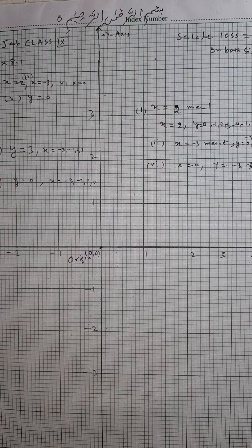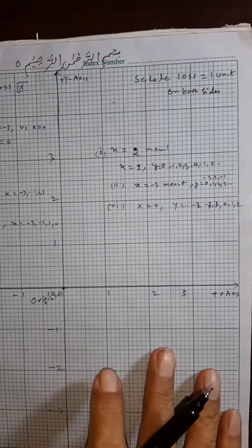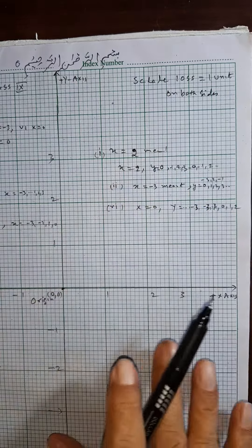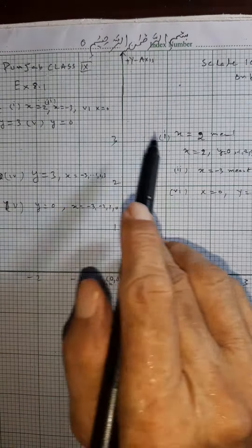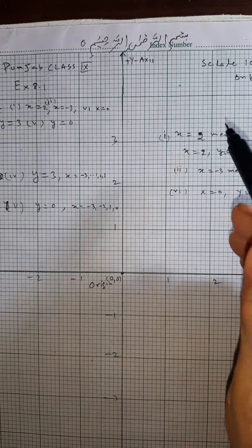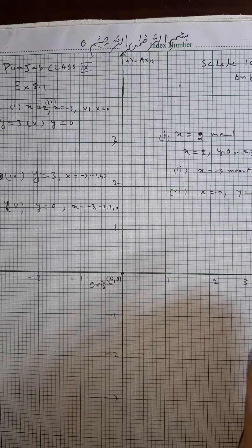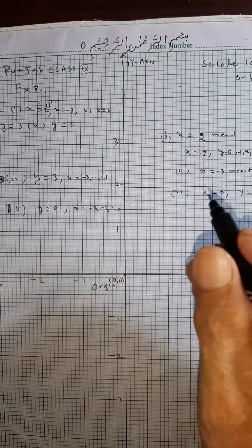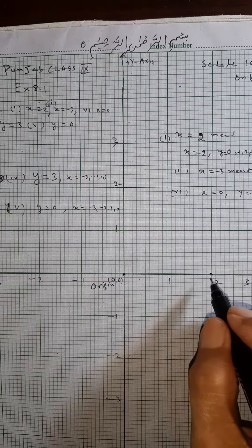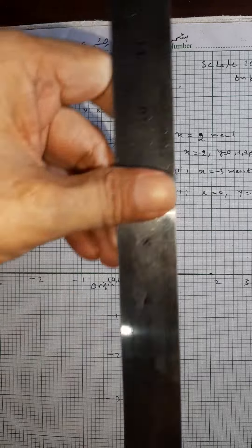Bismillahirrahmanirrahim. We have taken the scale: 10 small squares equal to one unit on both axes. Part one is x is equal to two. X is equal to two means y can have any value. Here x is equal to two, then we can draw the line.